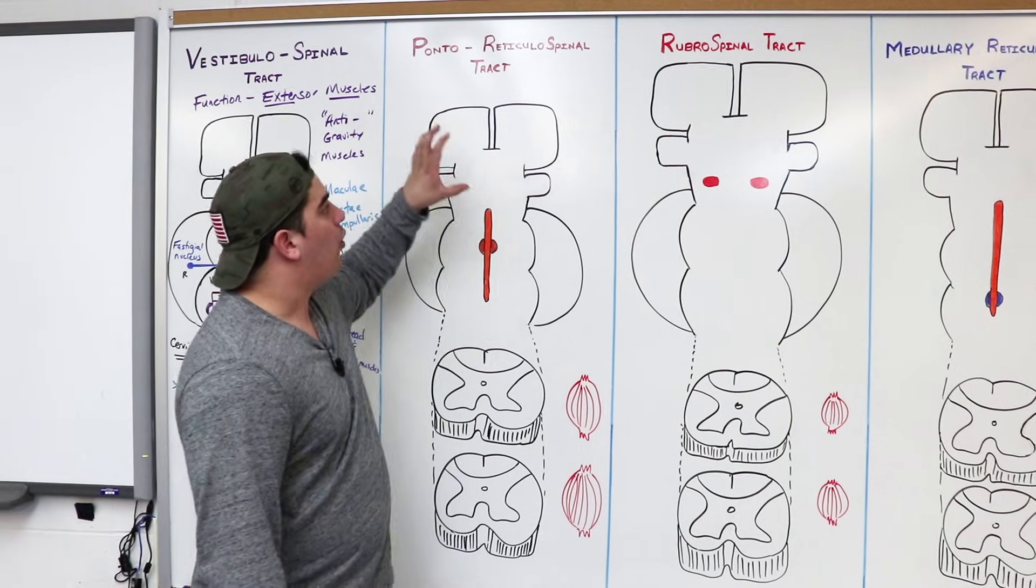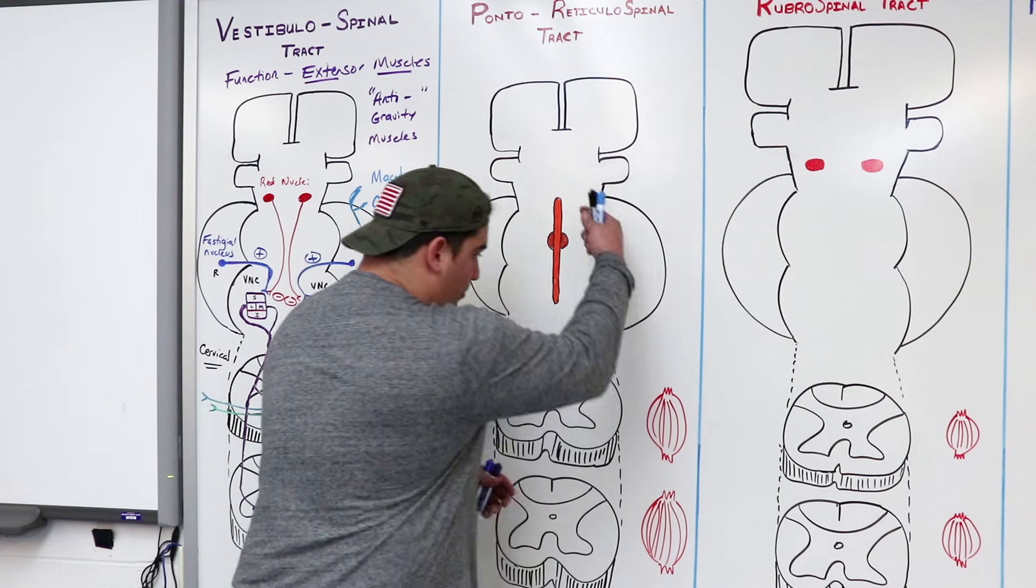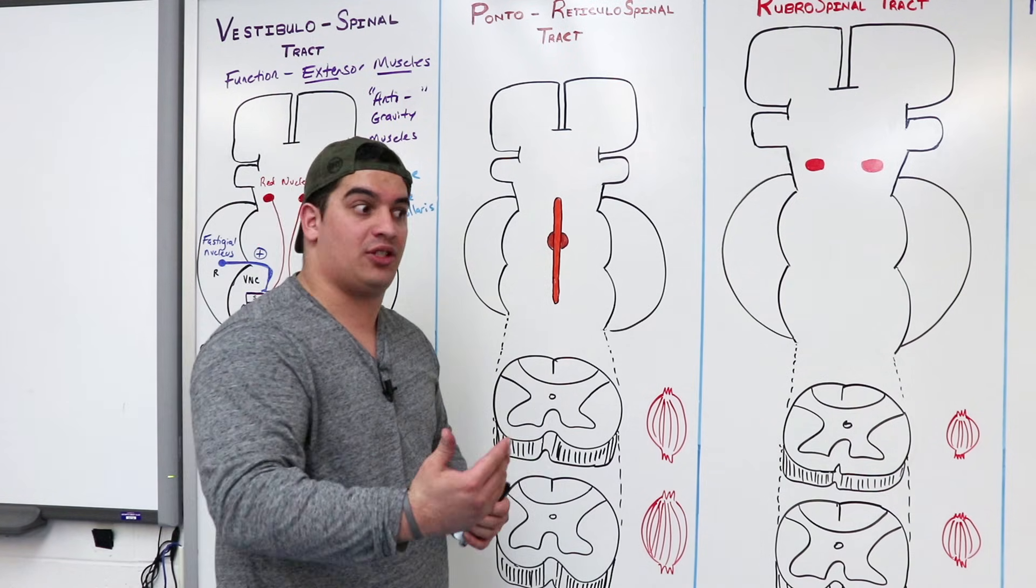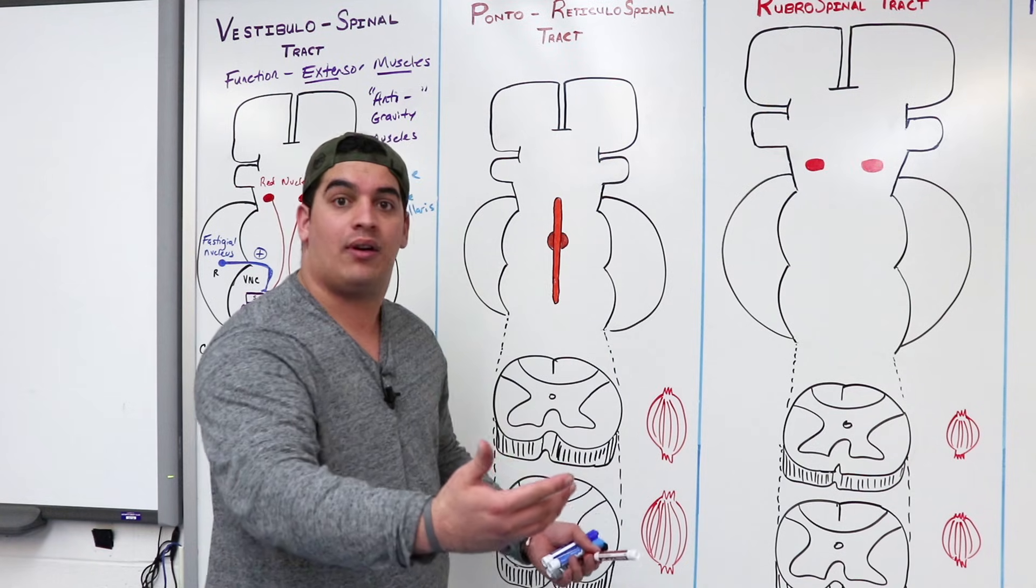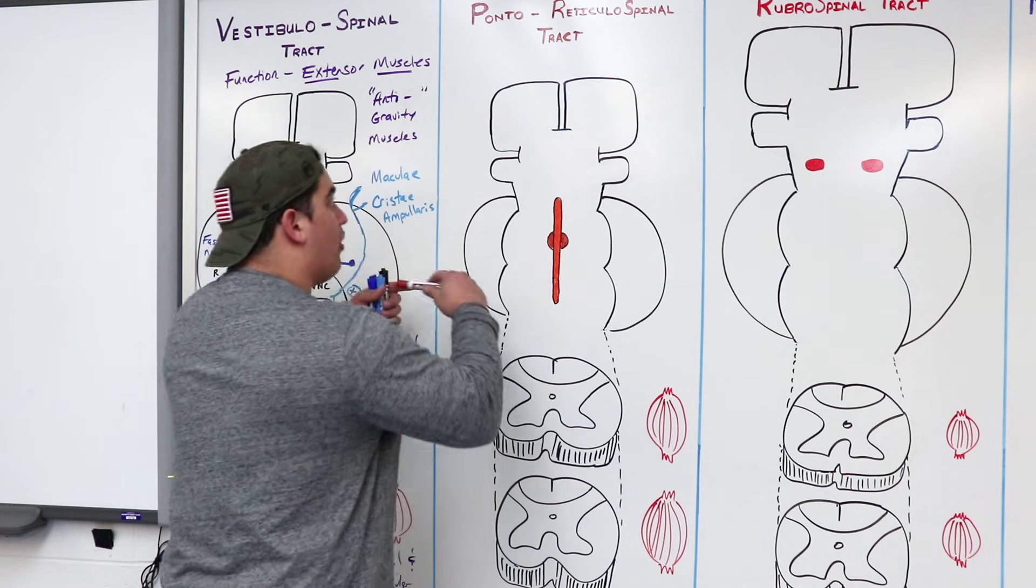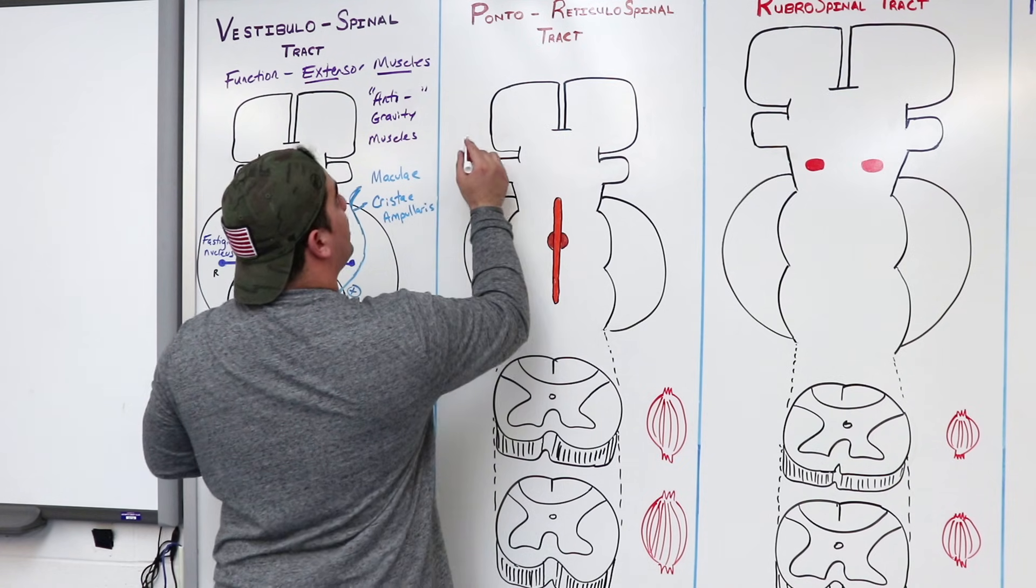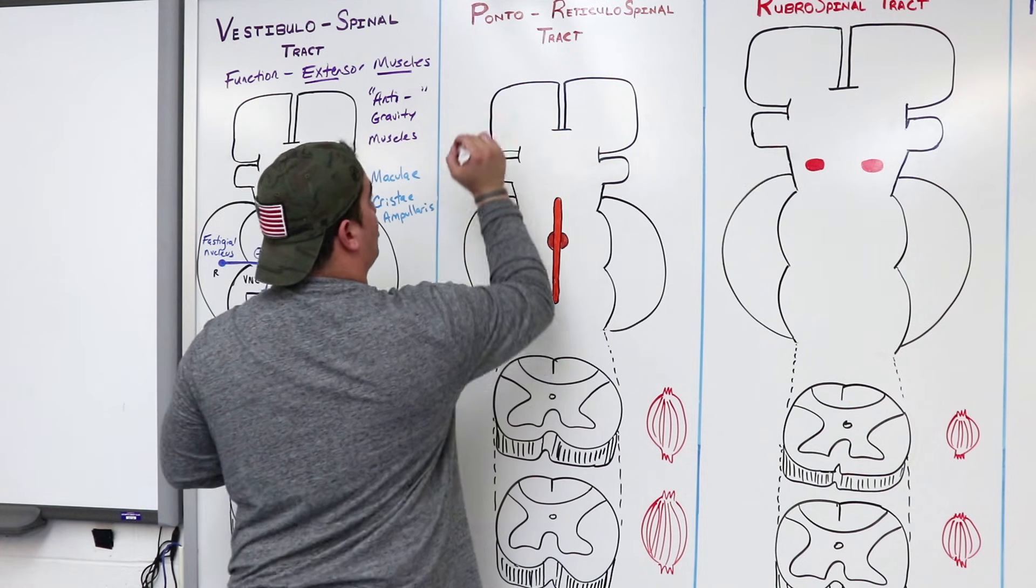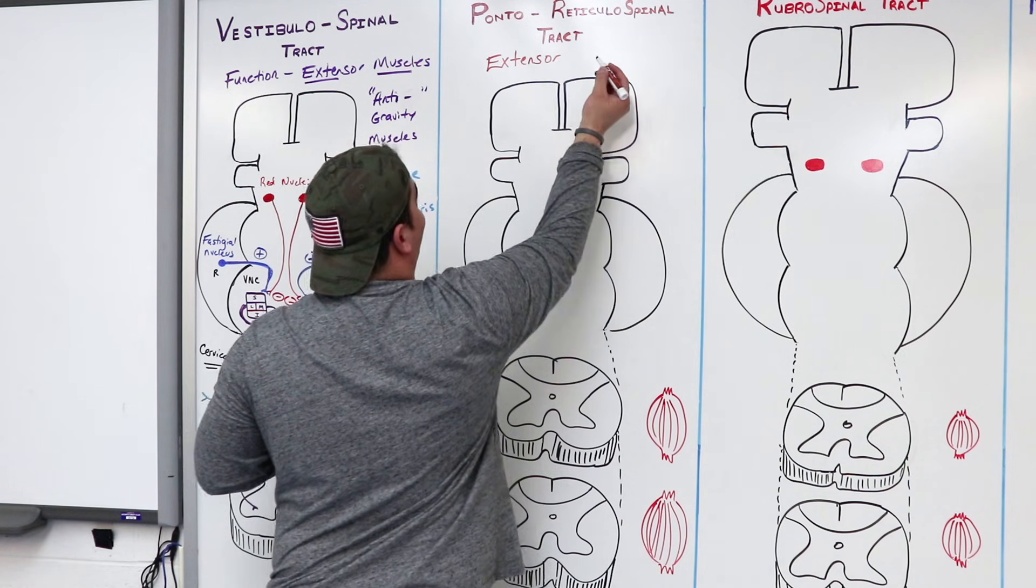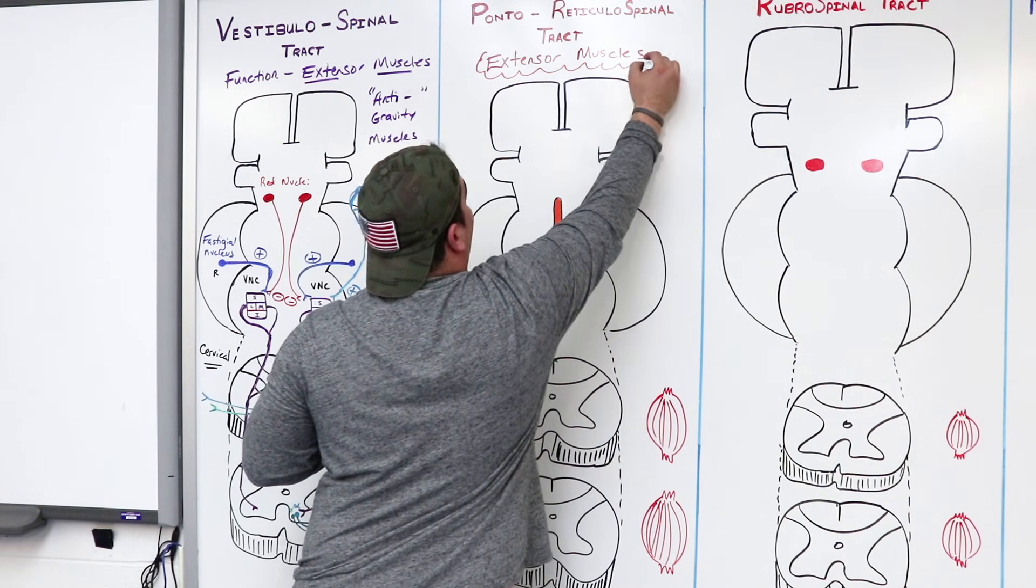But the Ponto-Reticulospinal, what is its overall function? That's what I want you guys to remember. The big things that I want you guys to get out of this is not only the descending fibers, the pathway itself, but to remember what is its function, what does it do. Its primary function is for activating extensor muscles. So extensor muscles, that is its main function, is to innervate the extensor muscles.